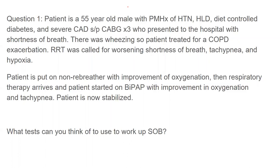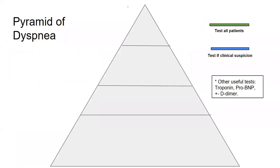You're probably going to get full labs on these patients. If someone is acidotic, you want to see if they have an elevated lactate. A CBC is helpful as well — anemia is a major cause of symptomatic shortness of breath. So this is what I call the pyramid of dyspnea.